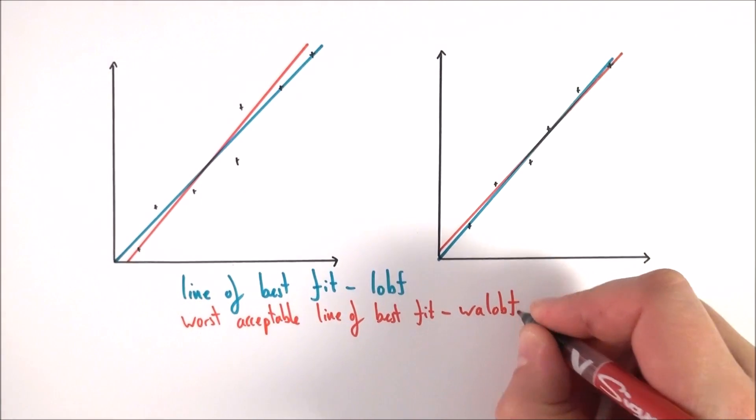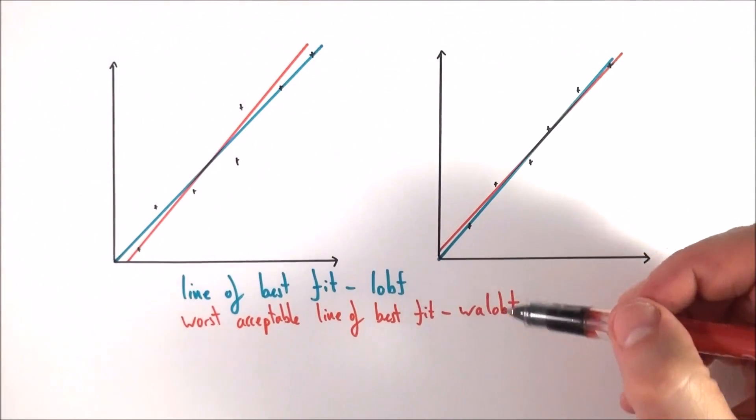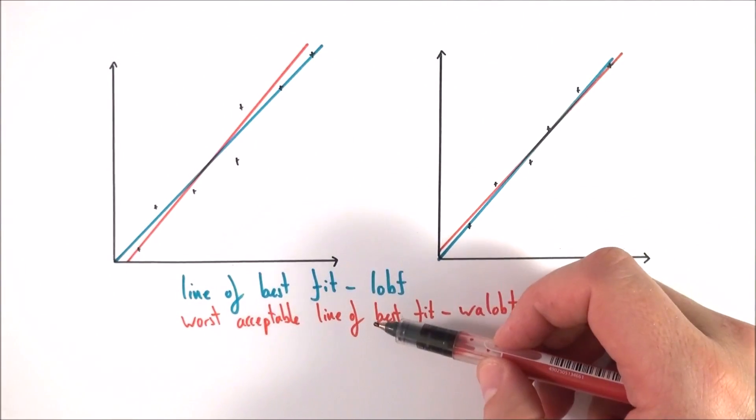And I'm going to call this one here the W-A-L-O-B-F, or the wallop off, which is not a proper scientific term, it's made up by me. So basically we've got lob off and the wallop off. Both of these are lines of best fit, but this is what we call the worst acceptable.